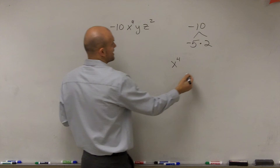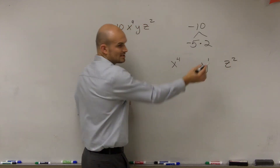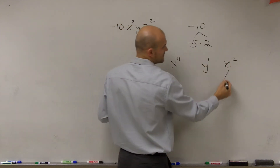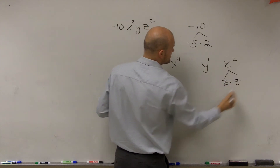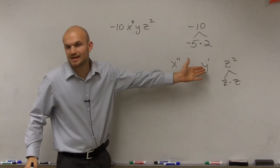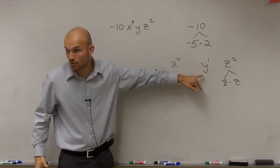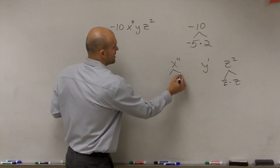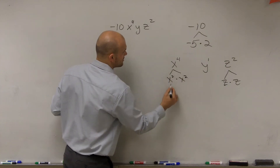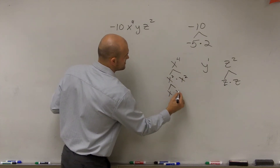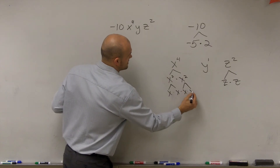We can break down x to the fourth, y to the first, and z squared. Z squared can be broken down into z times z. Y to the first power — you can't divide anything else besides y and 1, so therefore this is prime. You could do x squared times x squared, which would be x times x times x times x.